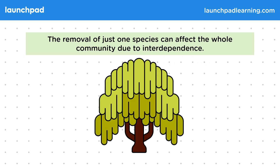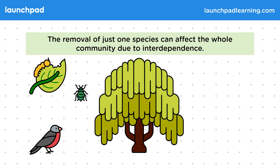Interdependence is especially obvious with large organisms such as trees and the large number of organisms that rely on them for their survival. Trees may feed or shelter many organisms including caterpillars, aphids and birds.